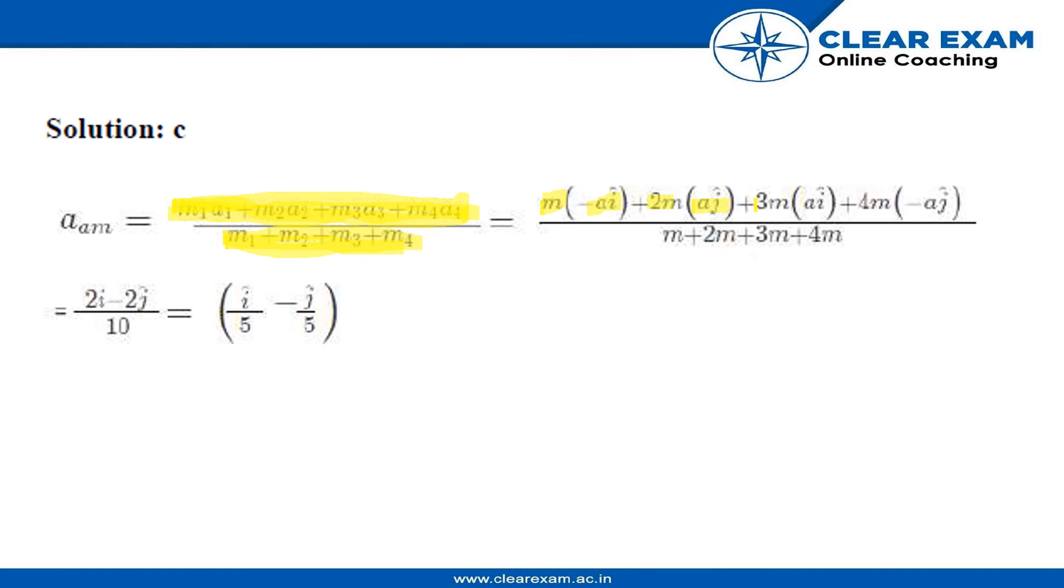Then m3 is 3m, acceleration is a in positive i cap direction. Mass of particle 4 is 4m, acceleration is a and direction is minus j cap. Now in the denominator we'll sum the masses: m1 is m plus m2 is 2m, m3 is 3m and m4 is 4m.